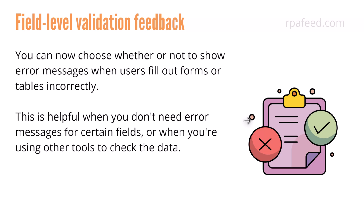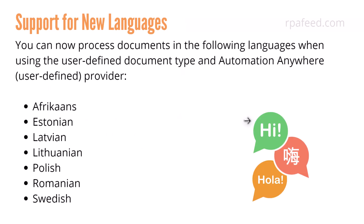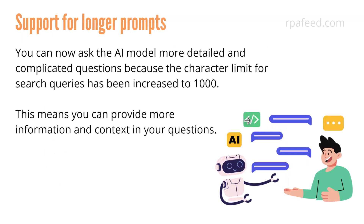This is helpful when you don't need error messages for certain fields or when you are using different tools to check the data. Support for new languages is also added — seven new languages — when you use a user-defined document type and the Automation Anywhere user-defined provider. Then there is support for longer prompts. Earlier it was limited to a certain number of characters, but now the length has been increased to 1000 characters, enabling you to provide more information and more context to help extract better results from documents.